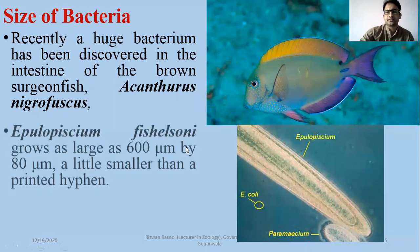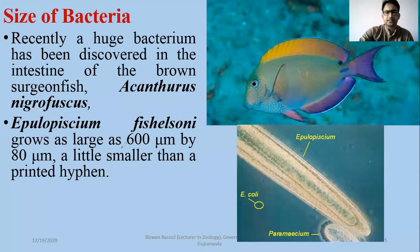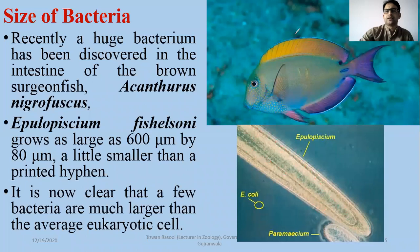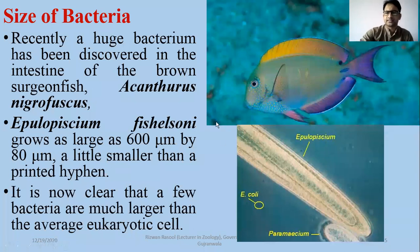This is the largest non-bacterium which can be observed with the naked eye — it is so large that you can see it without using a microscope or lens. It is 600 micrometers long and 80 micrometers wide. This makes it clear that a few bacteria are much larger than the average eukaryotic cell. The largest bacterium you should remember is Epulopiscium fishelsoni.